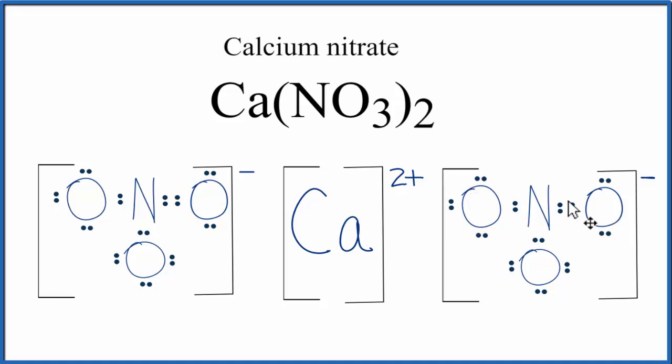What we've drawn is a formula unit of calcium nitrate. Normally you'll find calcium nitrate as a crystal, and that's made up of a bunch of these formula units in a regular repeating pattern.